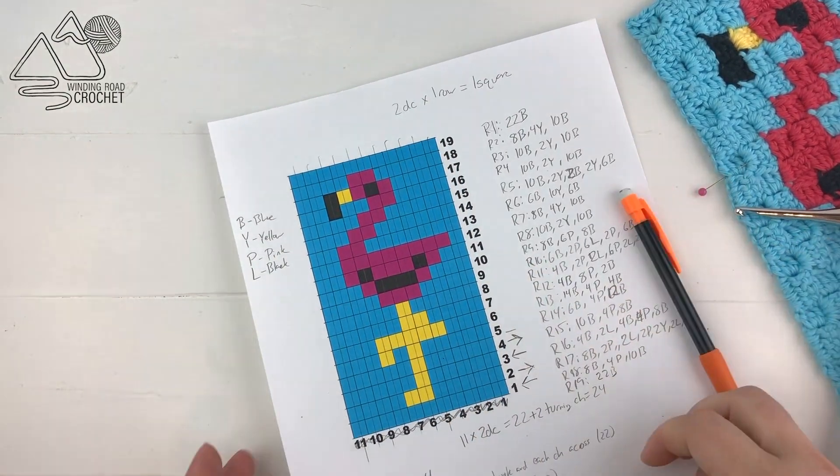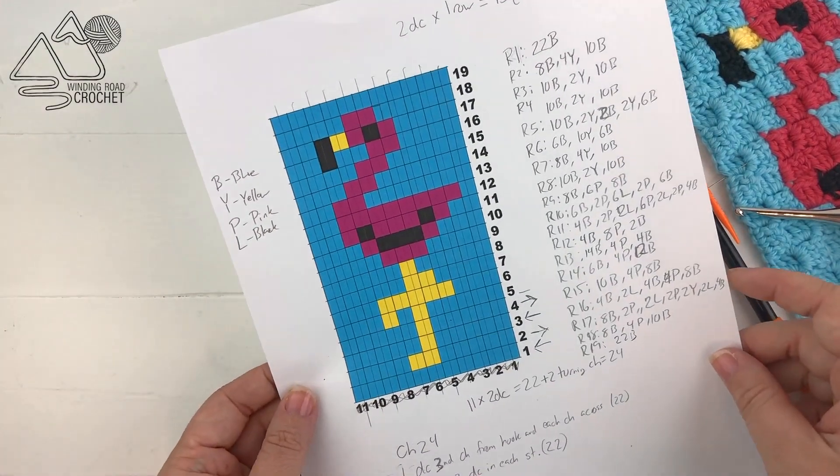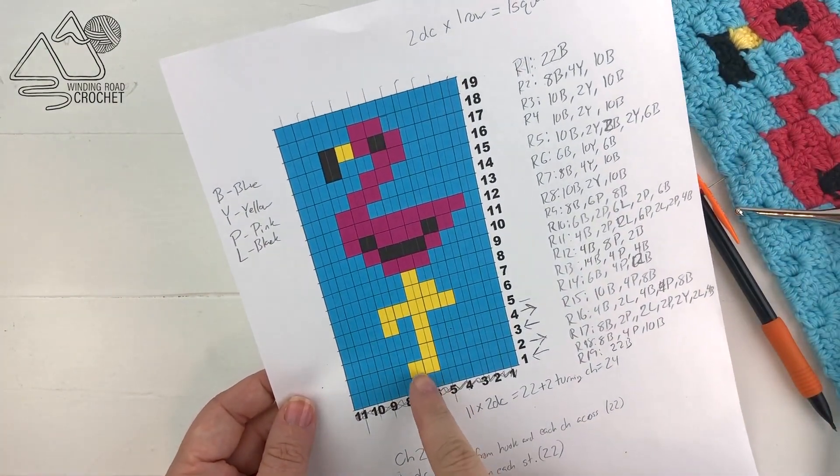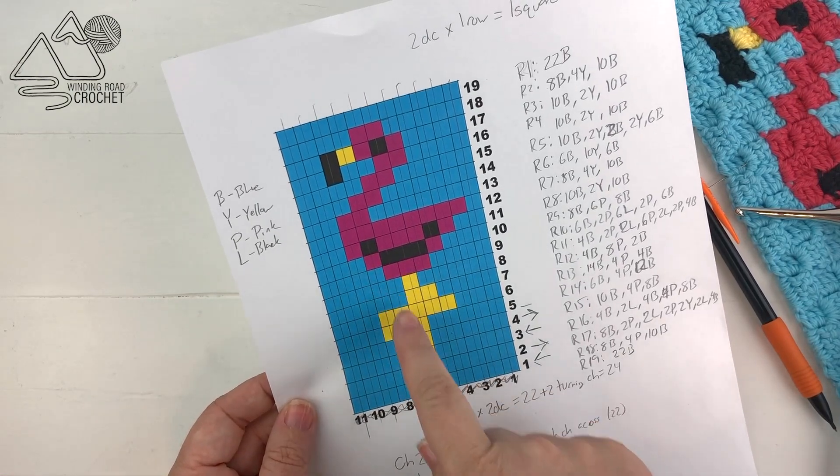So now that we have our graph adjusted, we have our key, we have our pattern written out, both the basic pattern and the color change pattern, we are all ready to go ahead and get crocheting on this project.